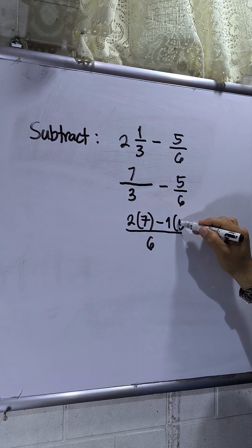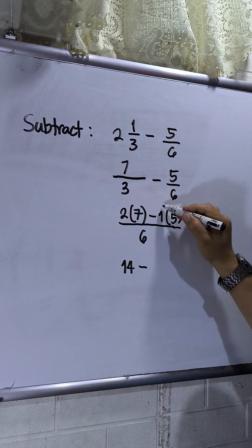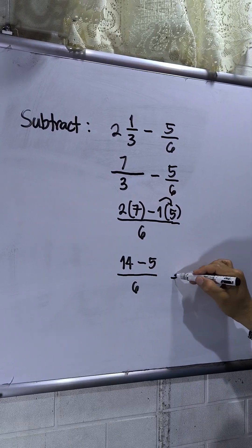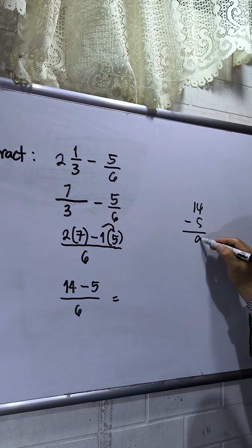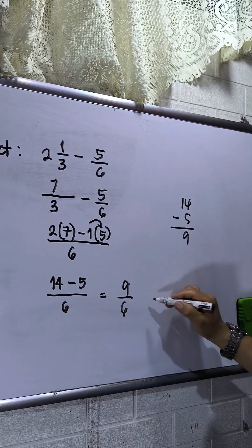So two times seven is fourteen, then one times five is five. This gives us 14/6 minus 5/6. Fourteen minus five is nine, so this will be 9/6. This is an improper fraction.